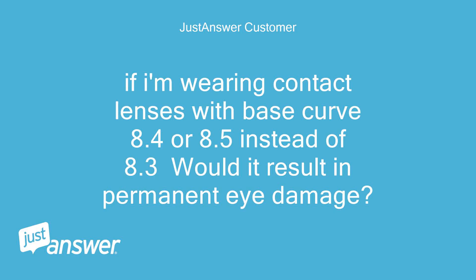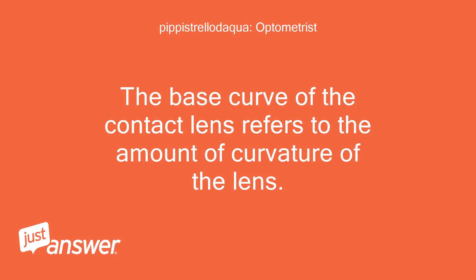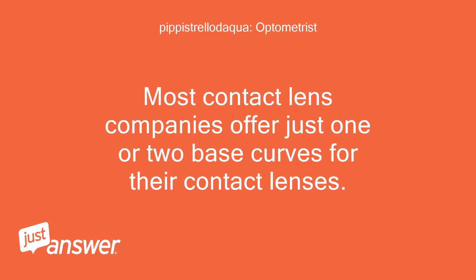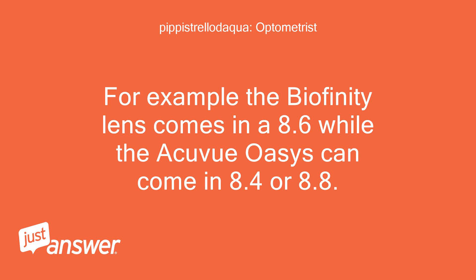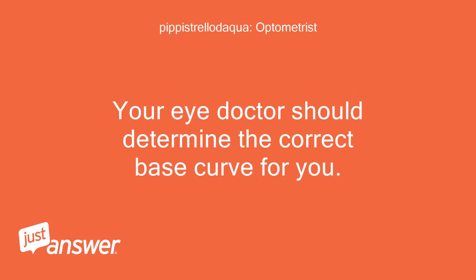If I'm wearing contact lenses with base curve 8.4 or 8.5 instead of 8.3, would it result in permanent eye damage? The base curve of the contact lens refers to the amount of curvature of the lens. Most contact lens companies offer just one or two base curves for their contact lenses. For example, the Biofinity lens comes in 8.6, while the AccuView Oasis can come in 8.4 or 8.8. Your eye doctor should determine the correct base curve for you.